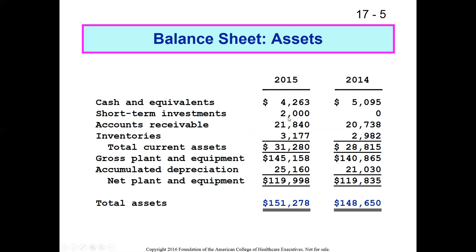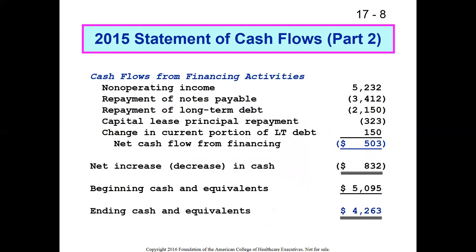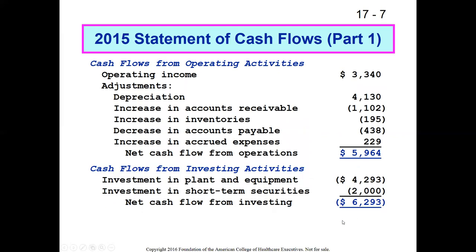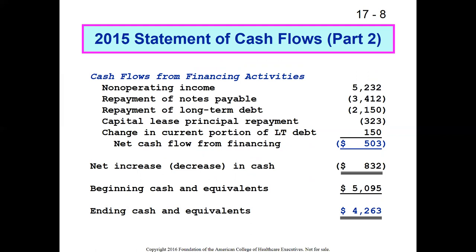The cash flow statement is interconnected — for example, the $2 million investment in short-term securities appears in both the investing section and the balance sheet's short-term investments line. It's a bit of a head scratcher at first; you have to practice asking yourself: if I do this particular transaction, what does it imply for my level of cash? You have to separate the transaction itself from how it was financed.